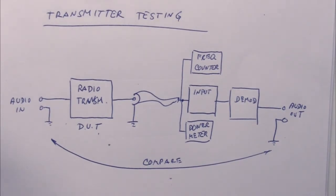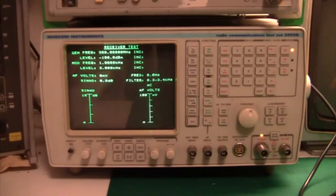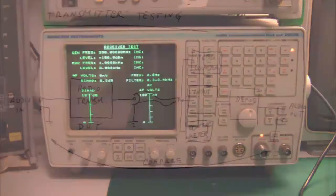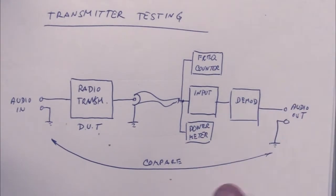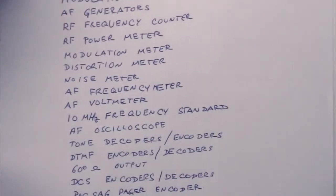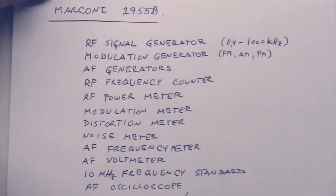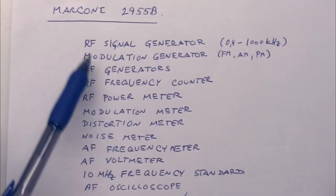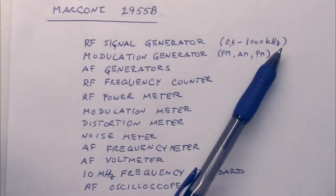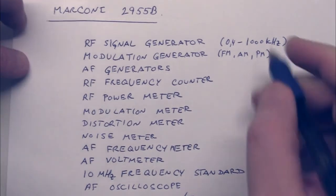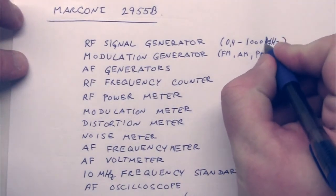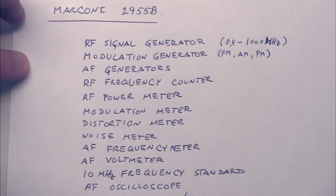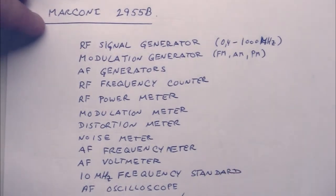And the reason I talk about this in this video is because I received a radio tester today. And basically, it can do everything that we have here in one nice box. And what it has inside is an RF signal generator from 400 kilohertz to 1 gigahertz. And it can modulate using FM, AM, and phase modulation.